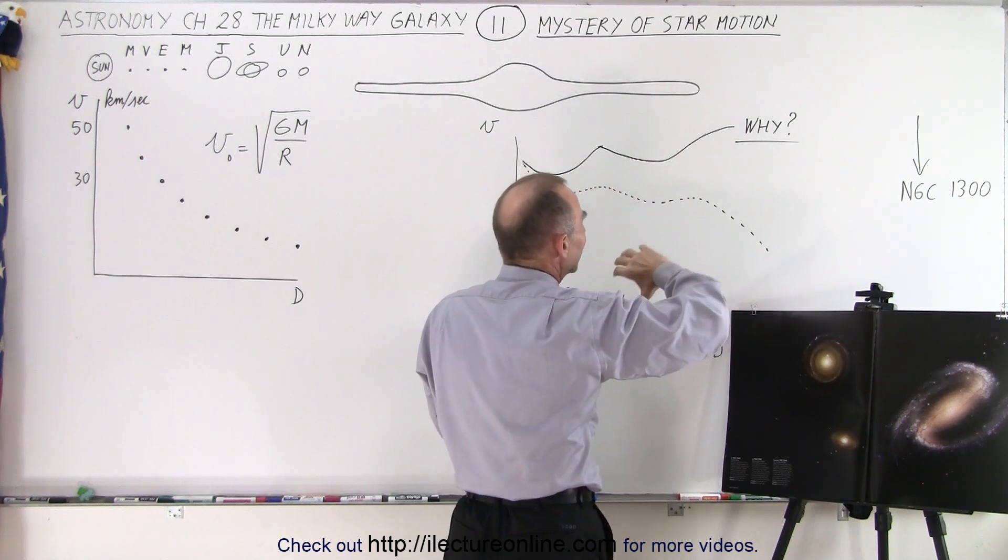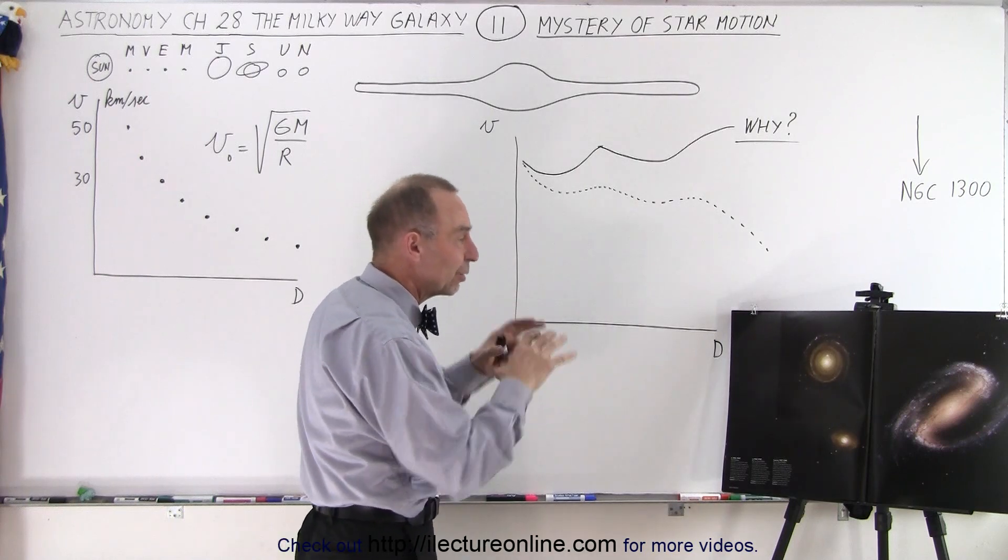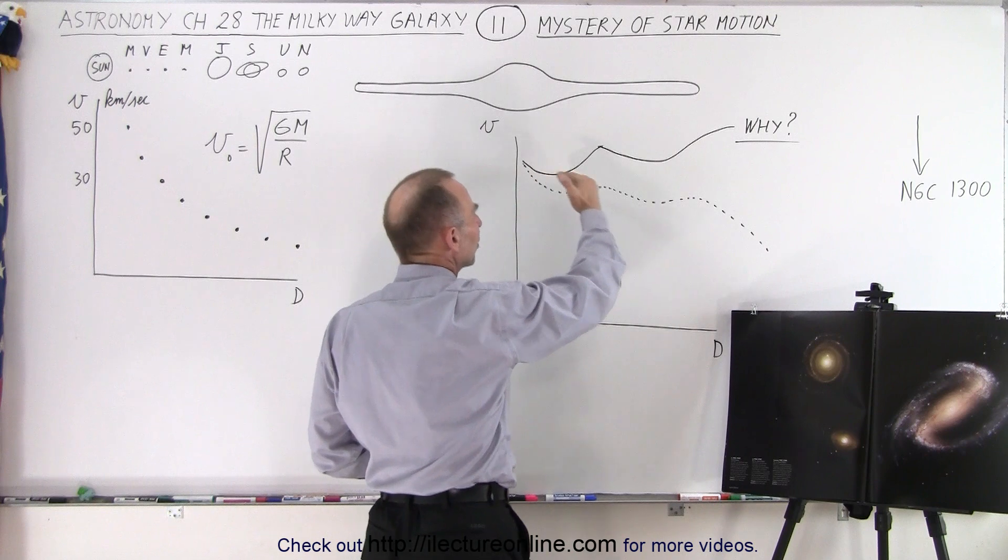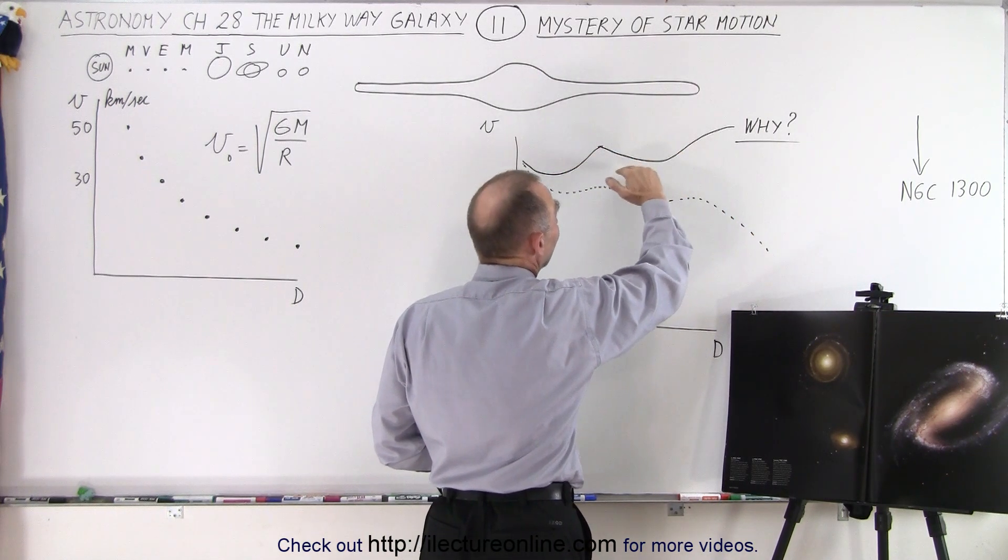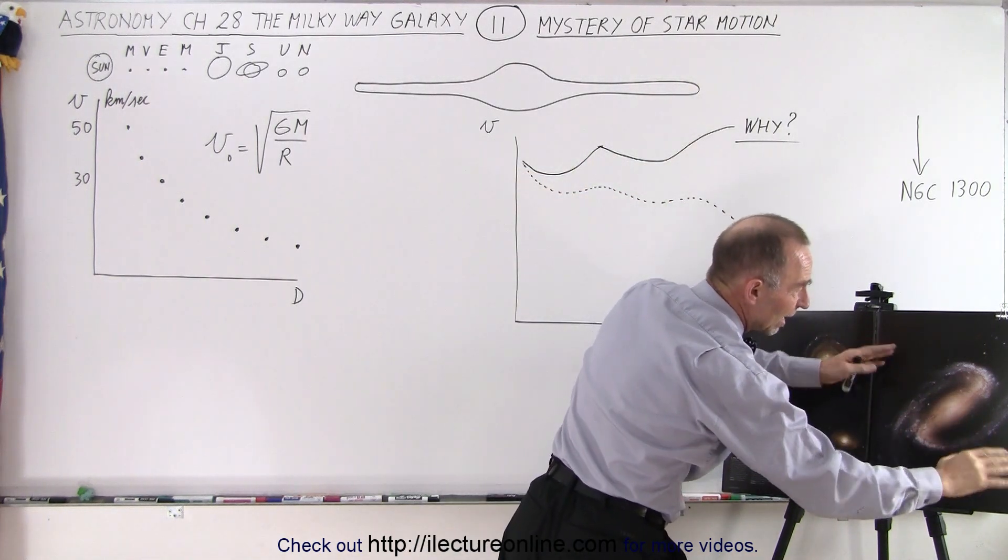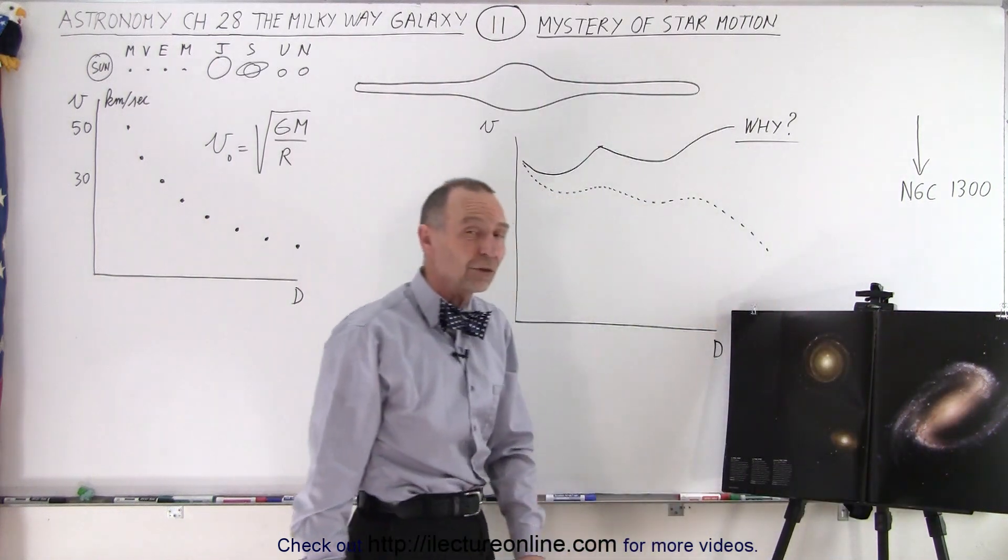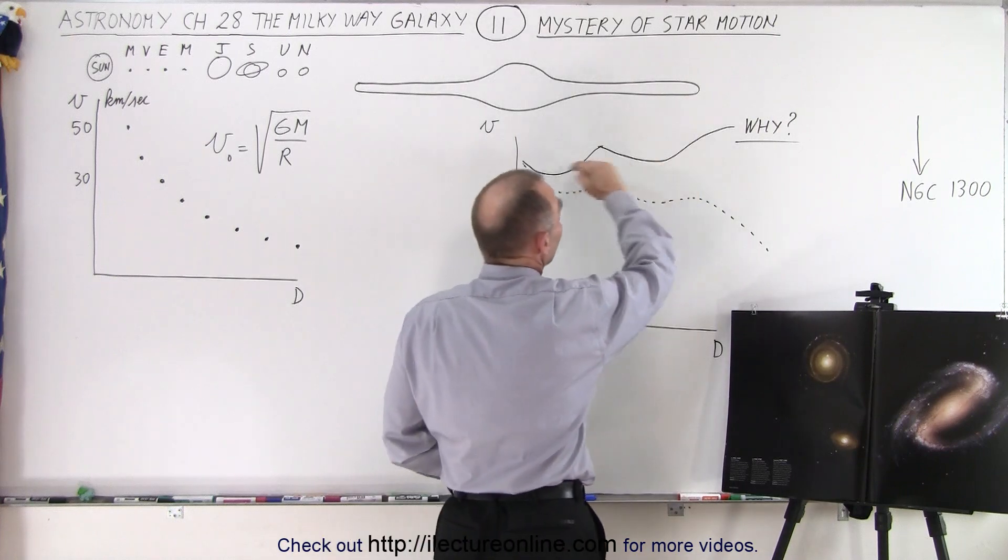Every time you hit a spiral arm, you expect some increase in the velocity because of the added mass that you then contain within that spherical region. But instead of seeing a general downslope of the curve, you don't see that. You see kind of a flat curve. At the end, when you get to the region where there's no more stars and you expect the stars to be moving slower and slower, you find out that is not the case. They don't slow down - they stay pretty well even all the way through, even when you get beyond the confines of the vital part of the galaxy.